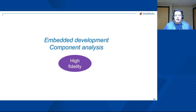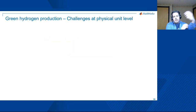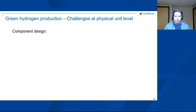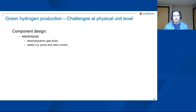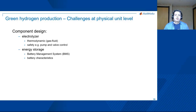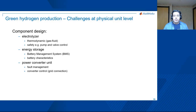Let's get started with a high-fidelity view on green hydrogen production, battery development, and component analysis. The challenges at a physical unit level are related to the components themselves and how we regulate them. The electrolyzer is a core element; energy storage — often a battery with a BMS (battery management system) — needs to interact with the rest of the elements and the grid. Power converters need fault management, grid connection algorithms, regulation of power, and even cooling.